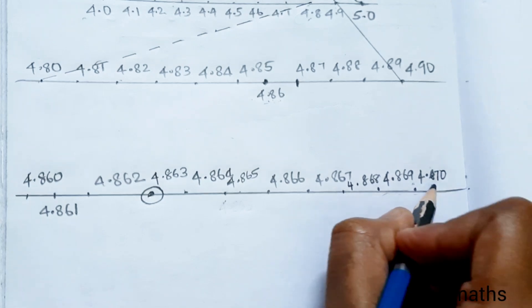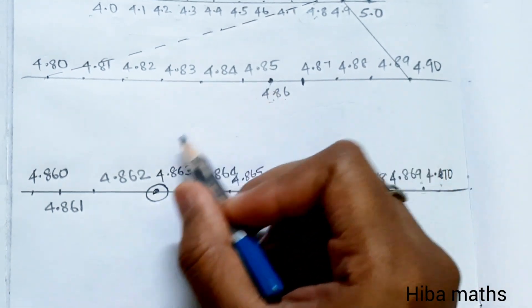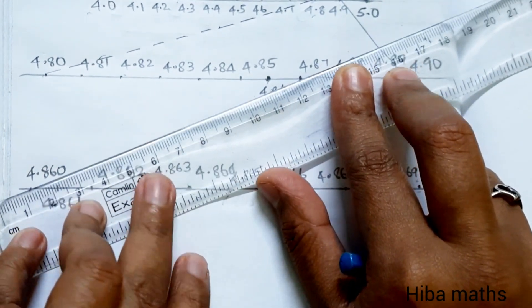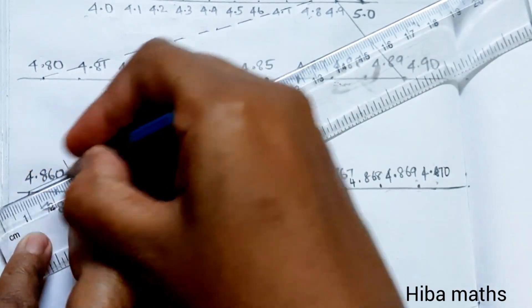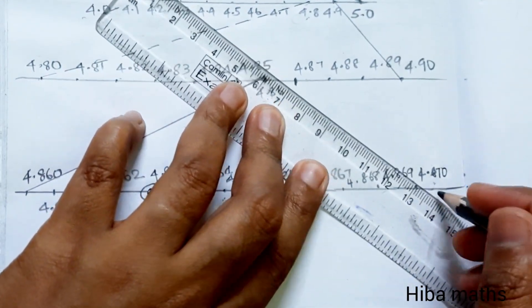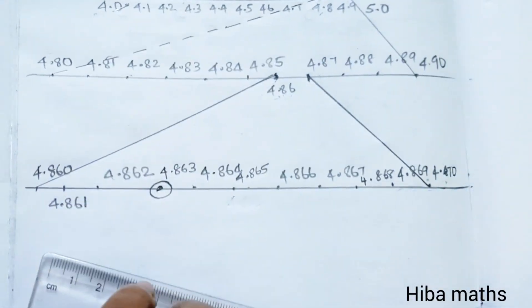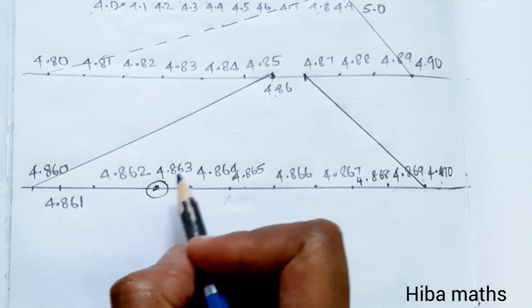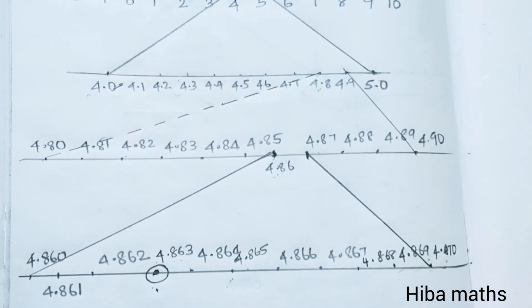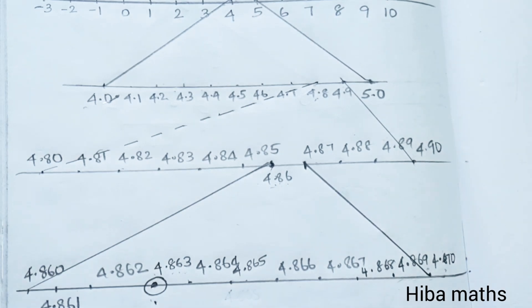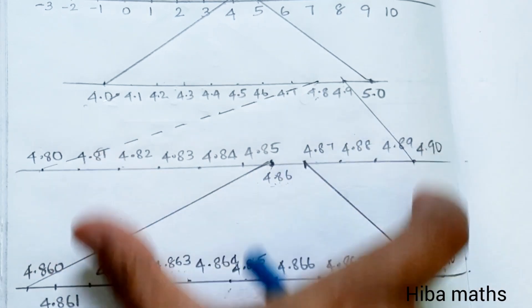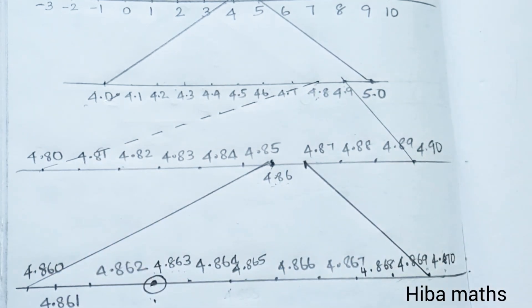Now between 4.860 and 4.870, let's draw lines to divide into 10 equal parts. We draw lines from 4.860 and 4.870. The third division will give us 4.863. Let's draw the final line from 4.870. Thank you so much for watching!